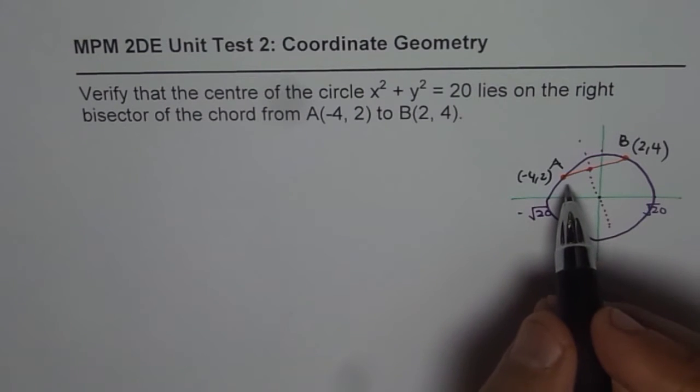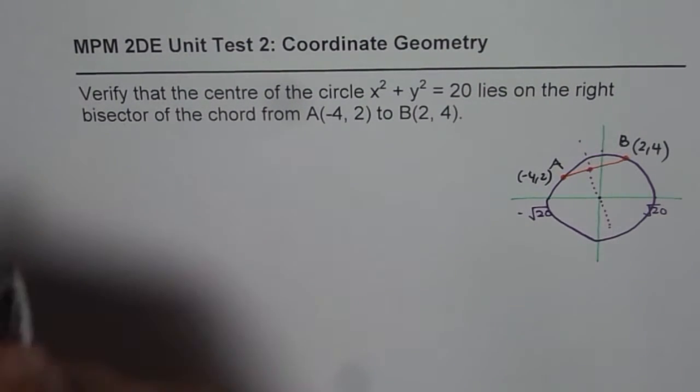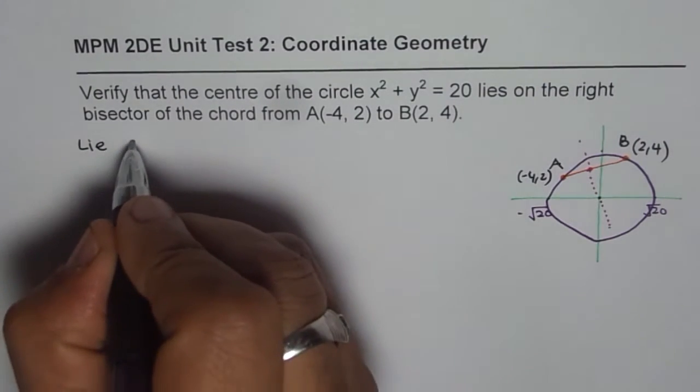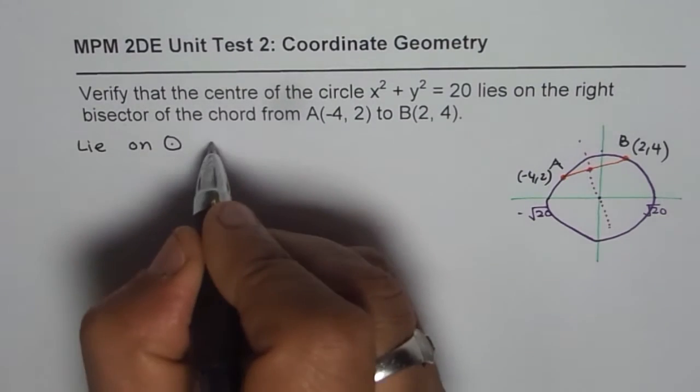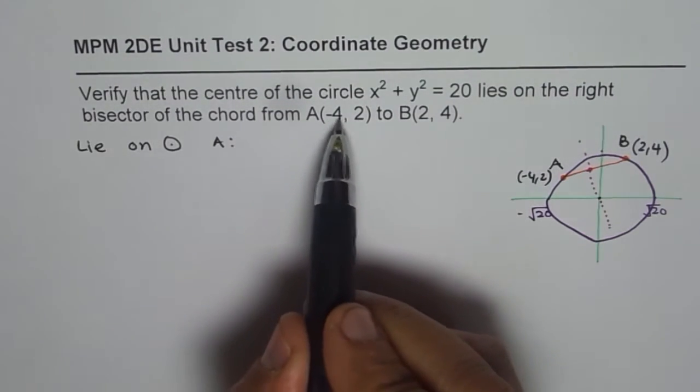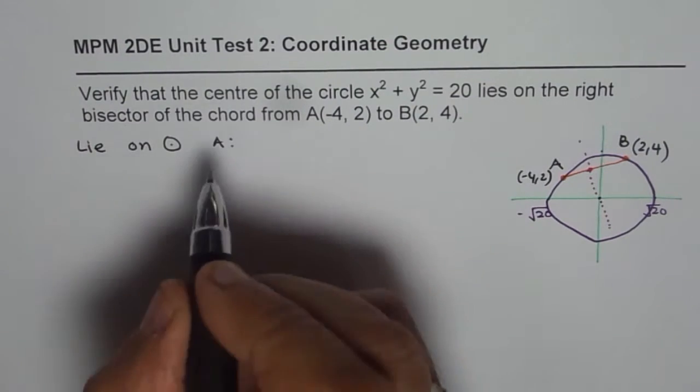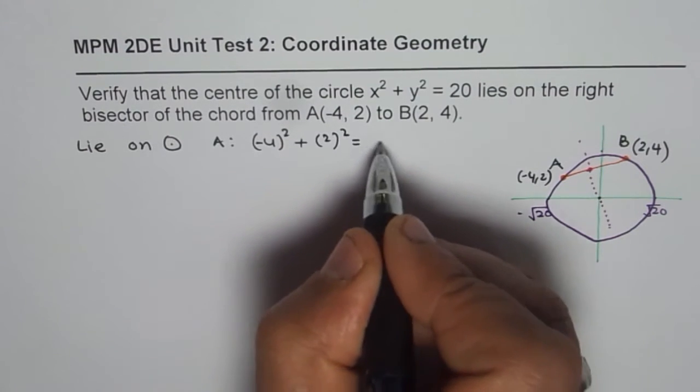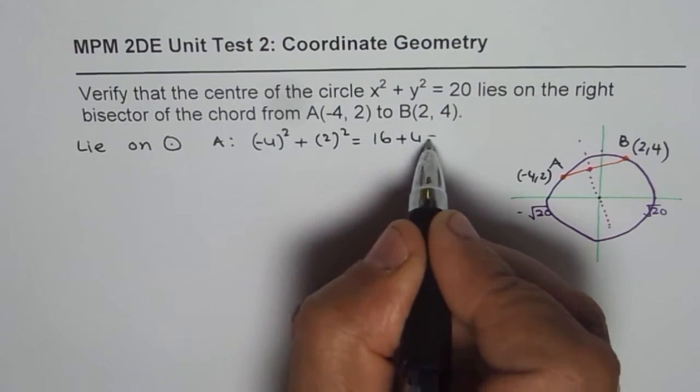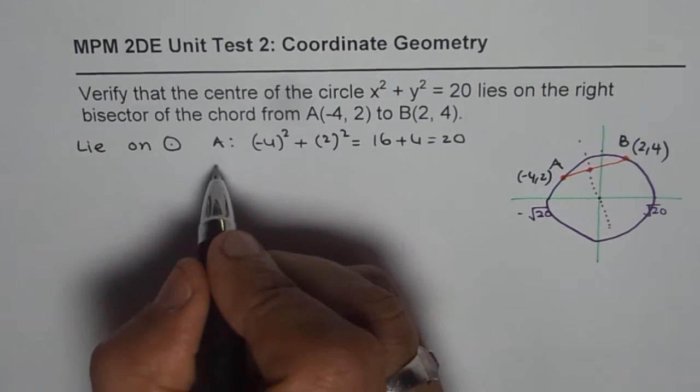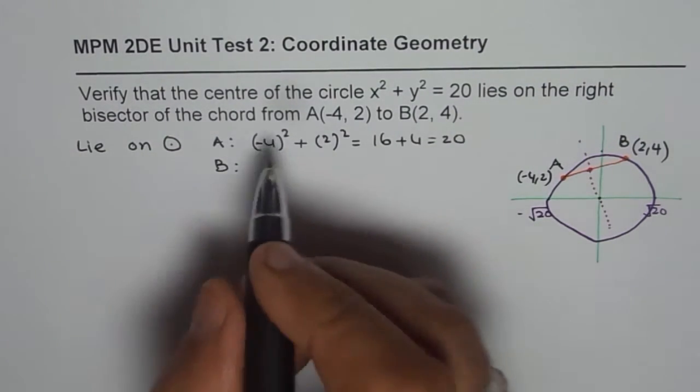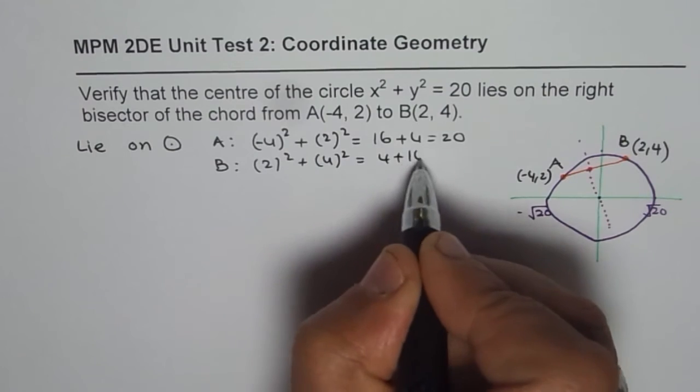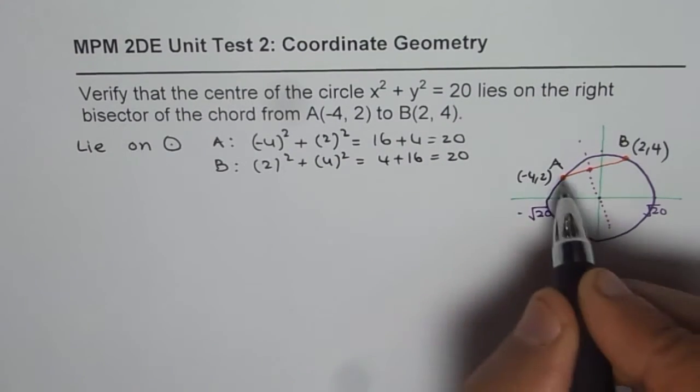So let's do one by one all the steps. First thing is there is no harm to verify that points A and B lie on the circle. So first thing, check whether the points lie on circle or not. So let's check for A. Now A is (-4, 2). So if you substitute -4 for x, what do you get? (-4)² + (2)² = 16 + 4 which is indeed 20. So it is perfectly fine. And B also is (2, 4), so 2² + 4² = 4 + 16 = 20. So the points are indeed on the circle.